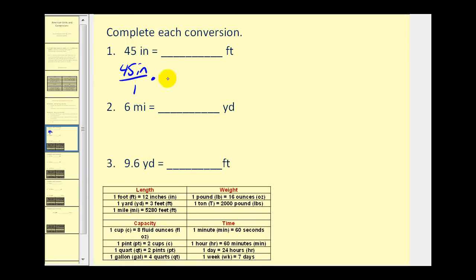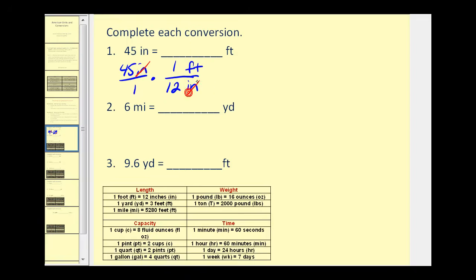To set up our unit fraction, we first place our units in the correct position. We want feet in our answer, so we put feet in the numerator. We want inches to change, so we write inches in the denominator. Notice how the unit of inches will simplify out. The conversion is one foot equals twelve inches, so we have one foot in the numerator and twelve inches in the denominator. Now we can see that inches will simplify out.